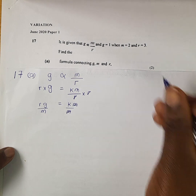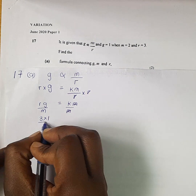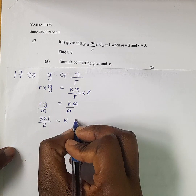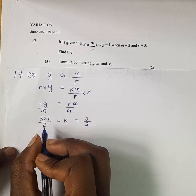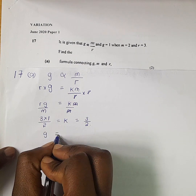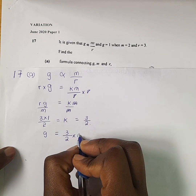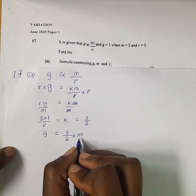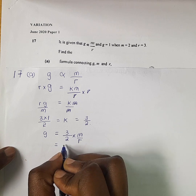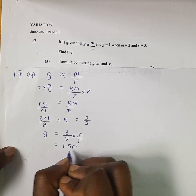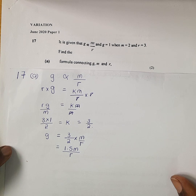We substitute: R is 3, G is 1, and M is 2. So K equals 3 over 2. We now write the equation: G equals 3 over 2 times M over R, which implies G equals 1.5M over R. That is the formula connecting G, M, and R.